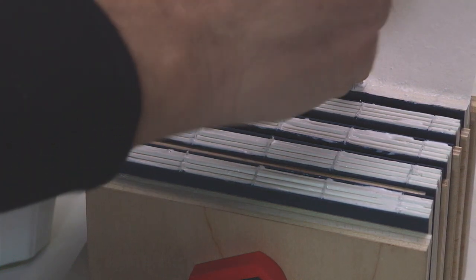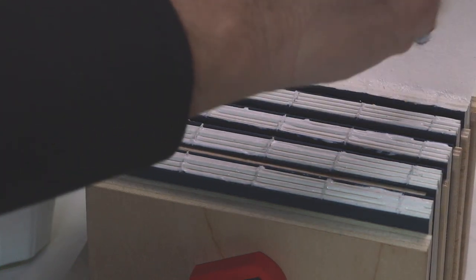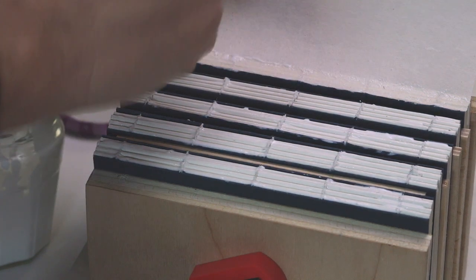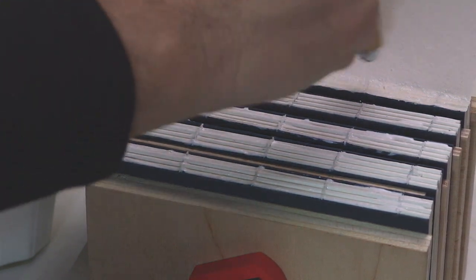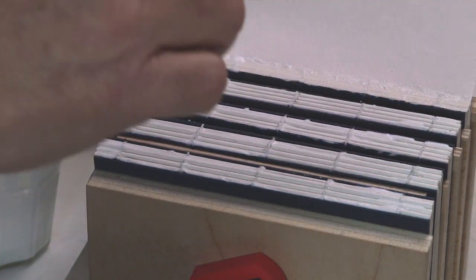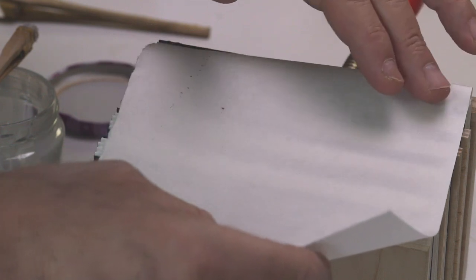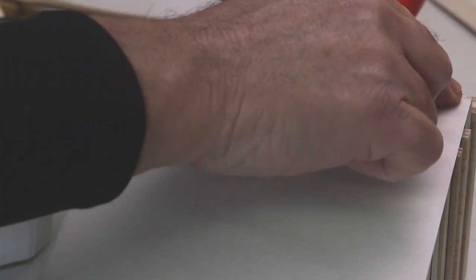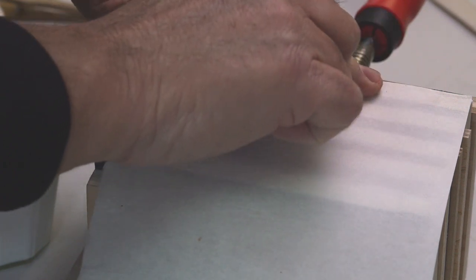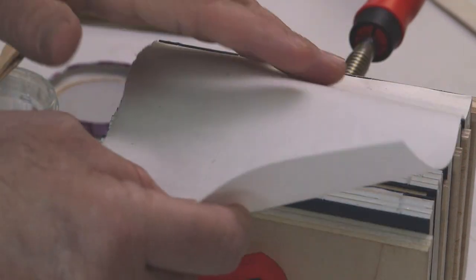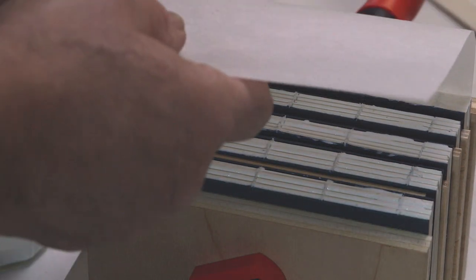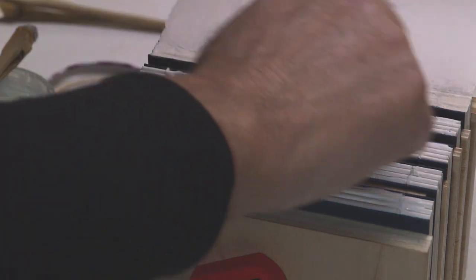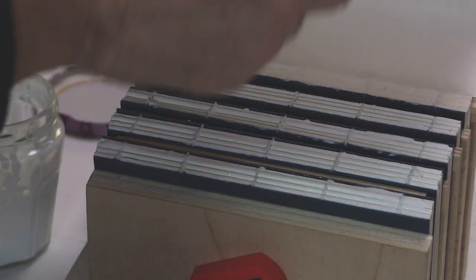And I am adding adhesive here because I'm going to turn this over and align the fold with this other edge of the spine. And I will crease that.